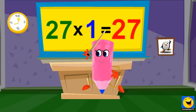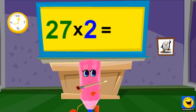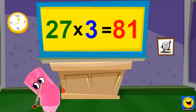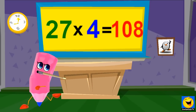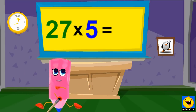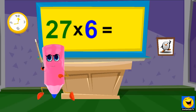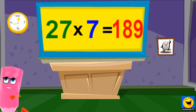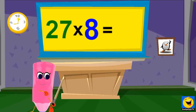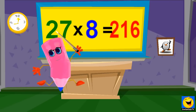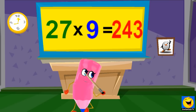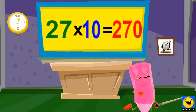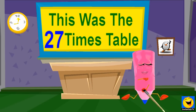27 times 1 is 27. 27 times 2 is 54. 27 times 3 is 81. 27 times 4 is 108. 27 times 5 is 135. 27 times 6 is 162. 27 times 7 is 189. 27 times 8 is 216. 27 times 9 is 243. 27 times 10 is 270.